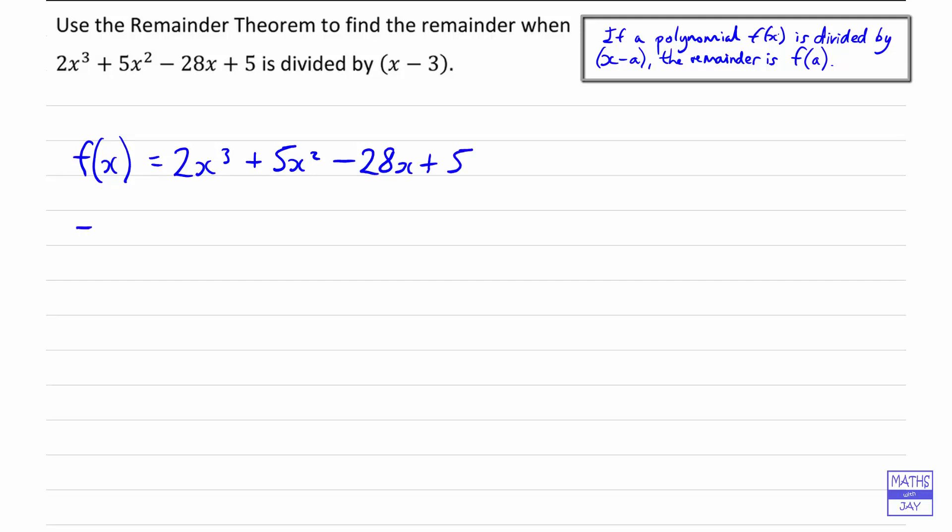And we want to work out the remainder, which we'll find by replacing x by 3. So that's going to be 2 times 3 cubed plus 5 times 3 squared minus 28 times 3 plus 5.